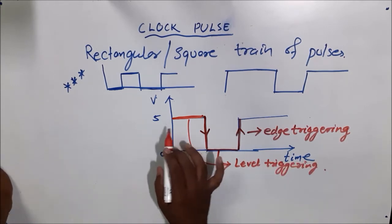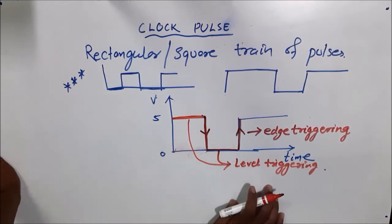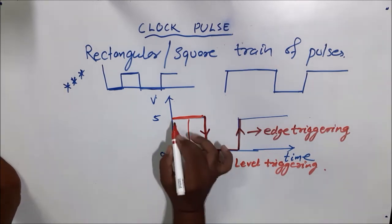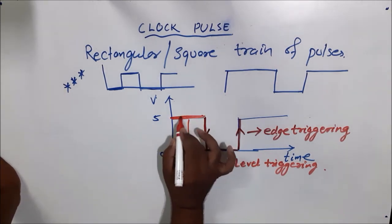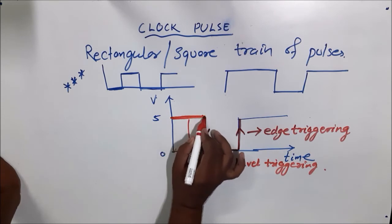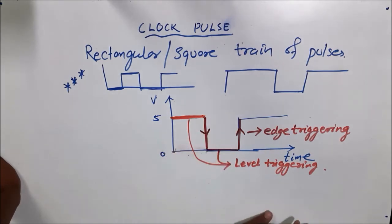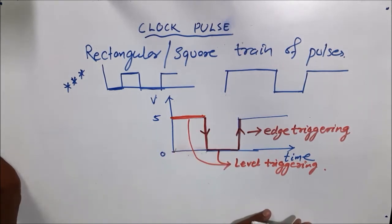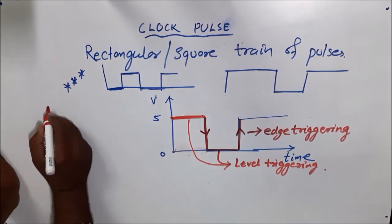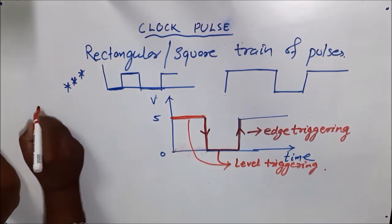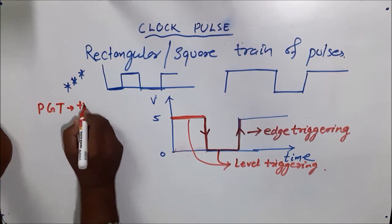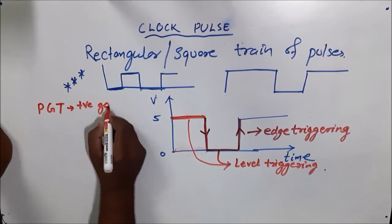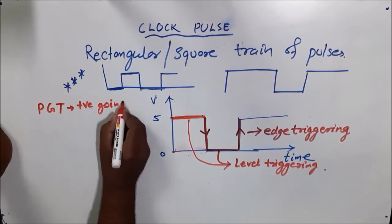Level may be high level or low level, but devices are made to operate at high level. So when the pulse reaches high level, the output changes. But in case of edge triggering, the flip-flop may be designed as PGT — this is called positive going transition.